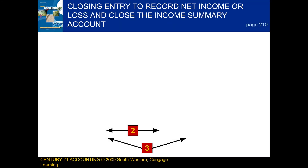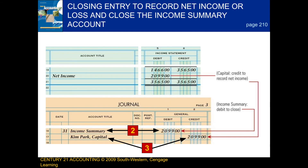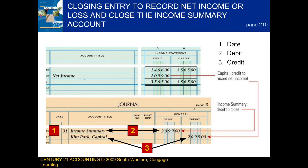Next, we're going to be talking about the closing entry to record net income or net loss and close the income summary account. There are a few steps we follow when doing this process. First, we write the date. Next, we record the debit. And finally, we record the credit. Now, if you notice here, we have a net income. So since we have a net income, we debit income summary and we credit the owner's capital account. If we had a net loss, these two accounts would be flipped, and we would have subtracted the amount when posting from the journal to the general ledger.